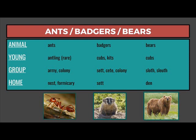As to badgers: the young of badgers are cubs or kits. A group of badgers would be a set, a seat, or a colony, and the home of badgers is a set. As to bears: the young of bears are cubs. A group of bears would be a sloth or a sleuth, and the home of bears is a den.